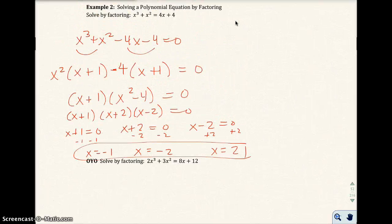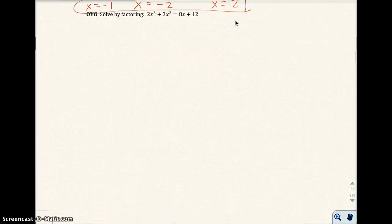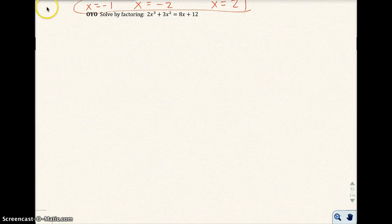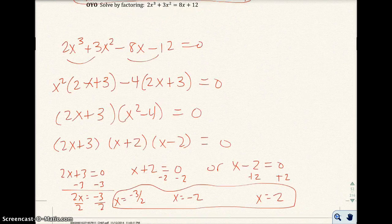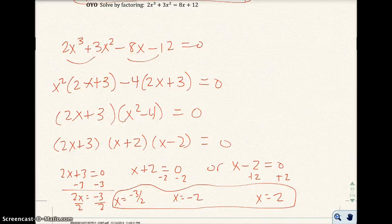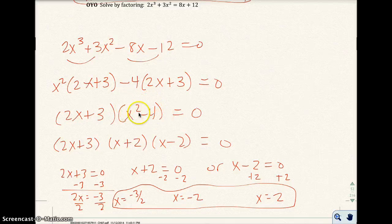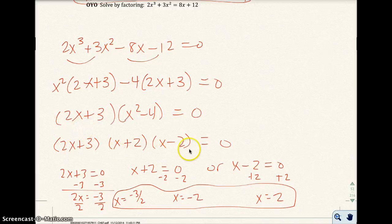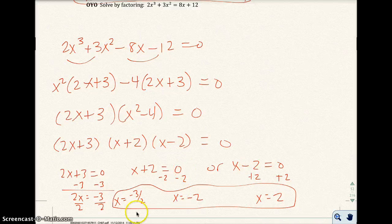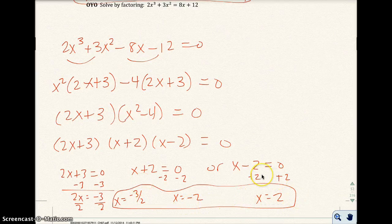Go ahead and pause the video, and try the next one on your own. I think that's the last problem of the section. It's a very short section. When you restart, I'll have all the answers. Okay, so I solved this by factoring. I set the left-hand side equal to 0 and factored by grouping. I got two factors: 2x plus 3 and x squared minus 4 equals 0. I factored this more by difference of two squares. I set each factor equal to 0. My three solutions are x equals negative 3 halves, x equals negative 2, and x equals 2.